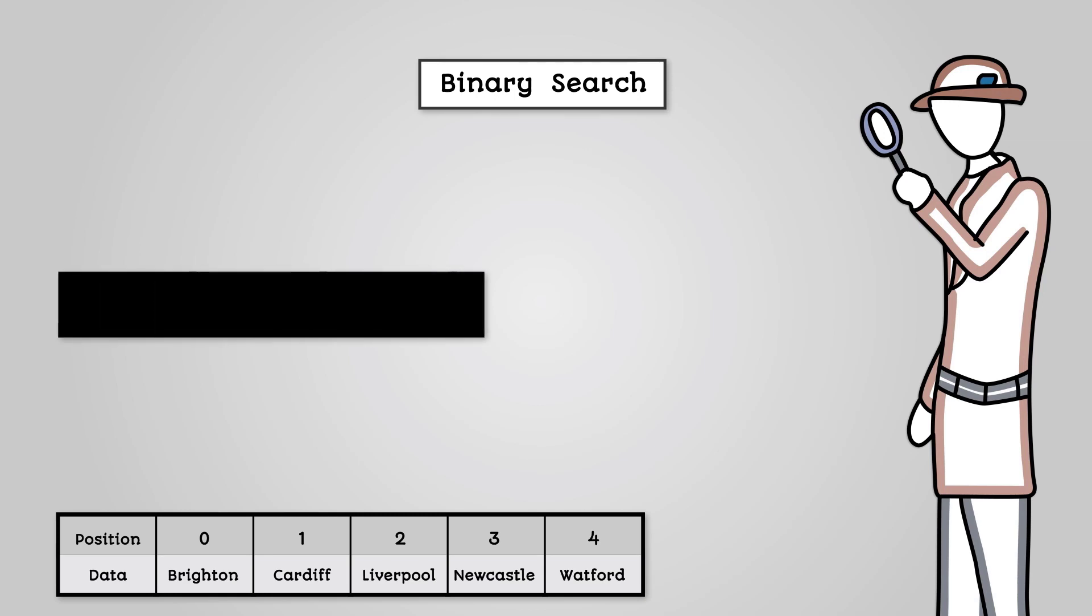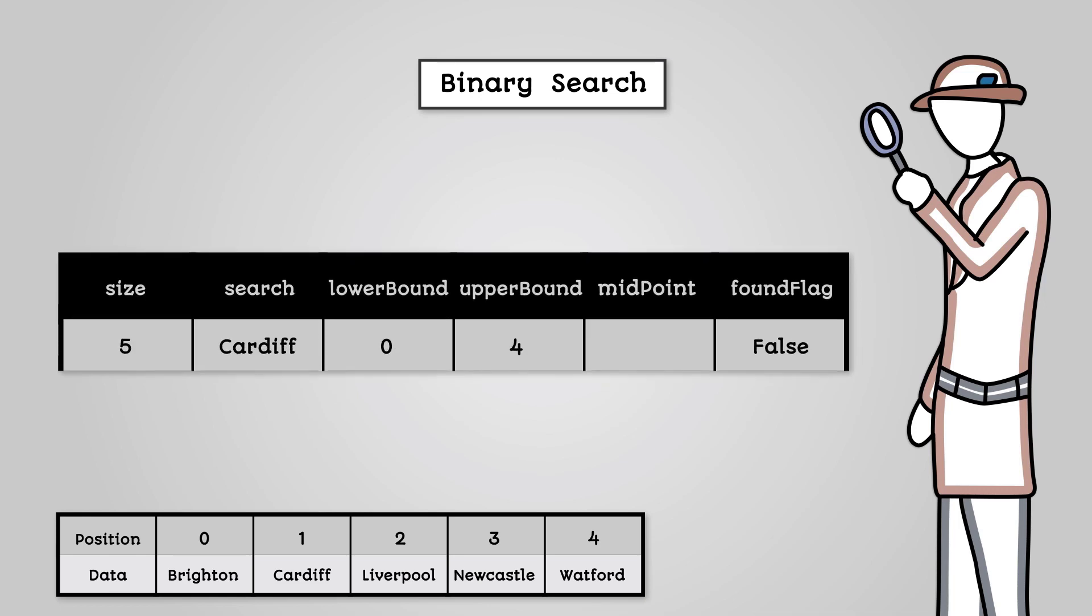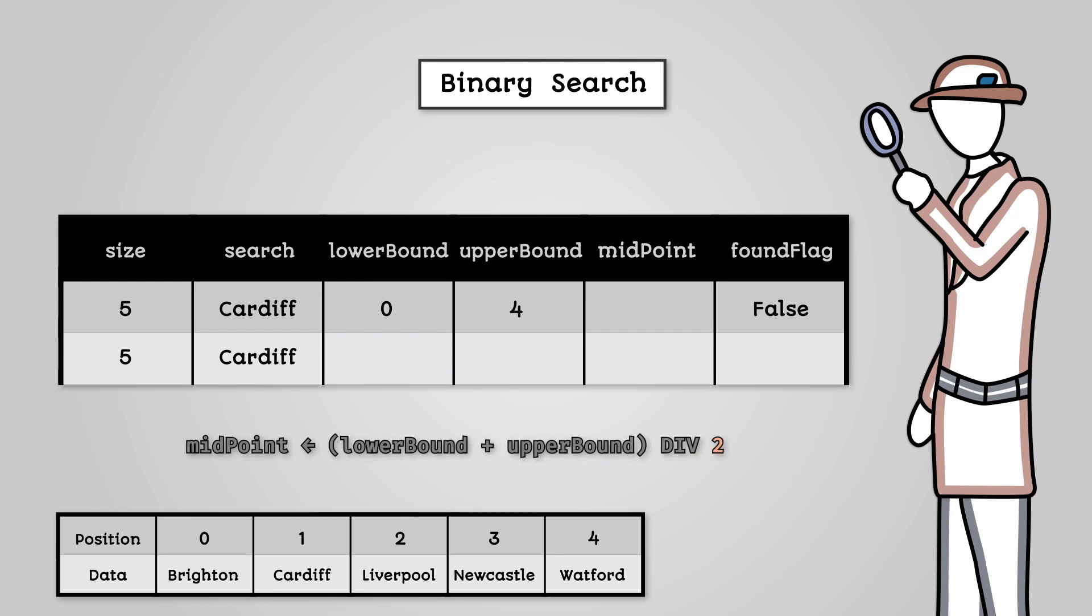We have six variables: size, search, lower bound, upper bound, midpoint and found flag. First we initialize any variables. First time around the loop we will first calculate the midpoint. This is the calculation lower bound plus upper bound div 2. In this case this would be 0 plus 4 div 2 which equals 2.